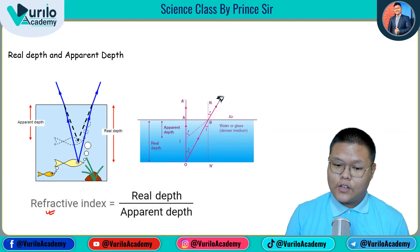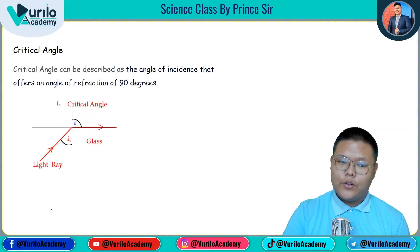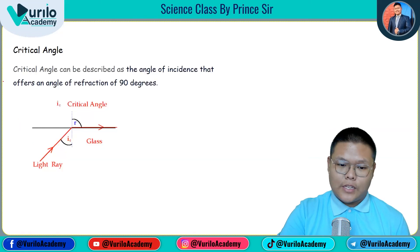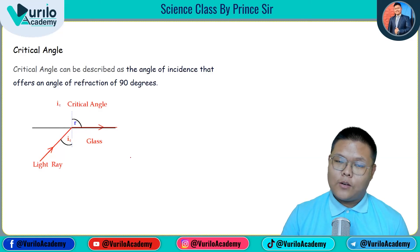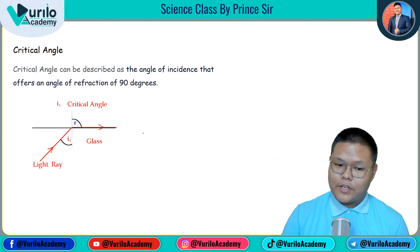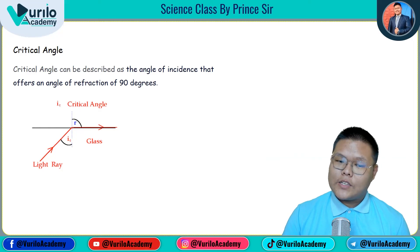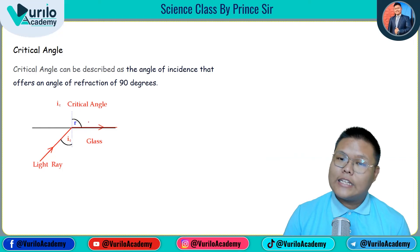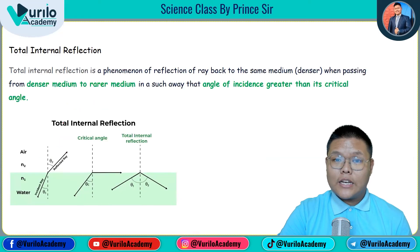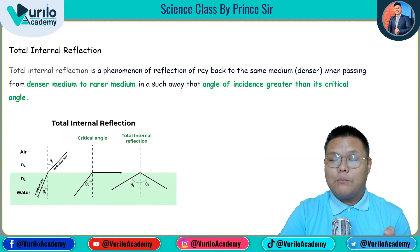The refractive index formula related to real depth and apparent depth is: refractive index = real depth upon apparent depth. The critical angle concept: as we increase the angle of incidence from the denser medium, at a certain angle the refracted ray makes an angle of 90 degrees — that is the critical angle.